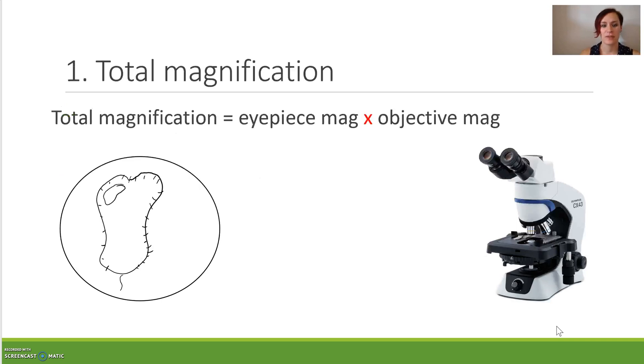Nice and easy to start with. Firstly, we're looking at total magnification. We have a formula for that. Total magnification is the eyepiece magnification multiplied by the objective lens.